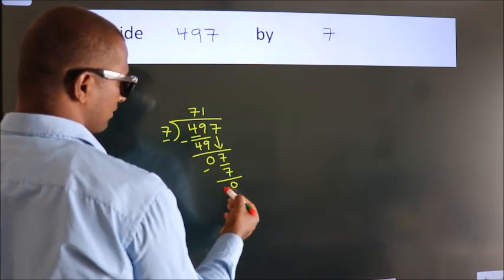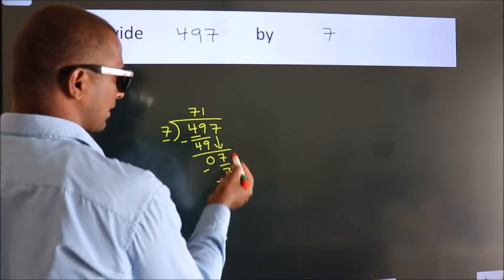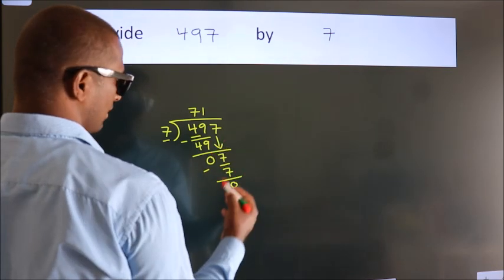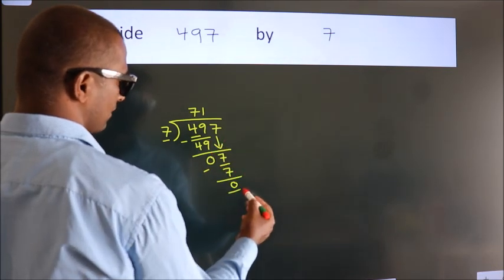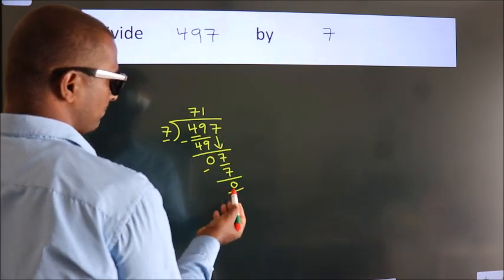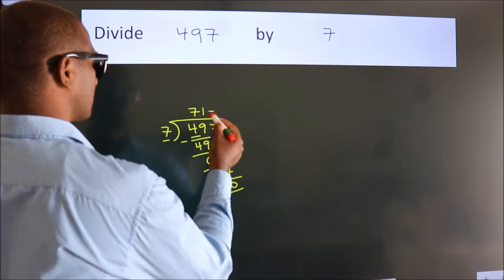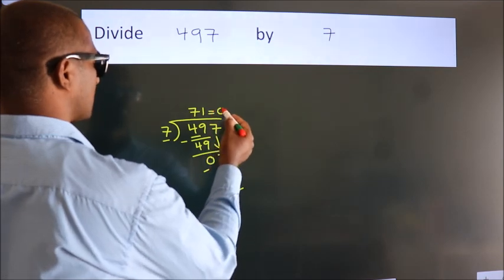After this, there are no more numbers to bring down, and we got remainder 0. So this is our quotient.